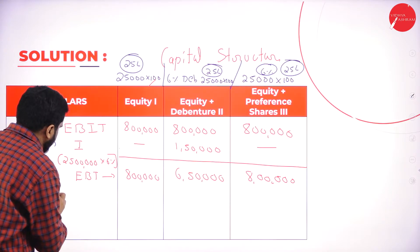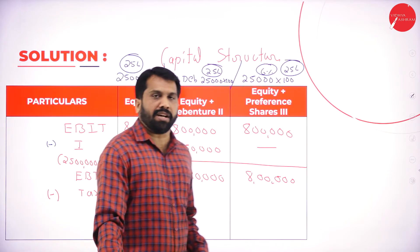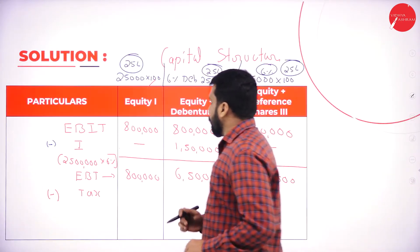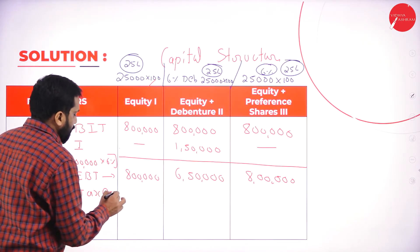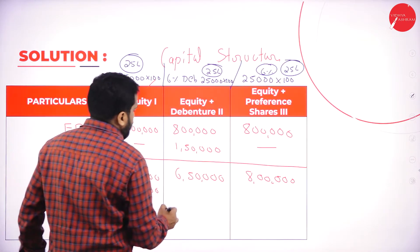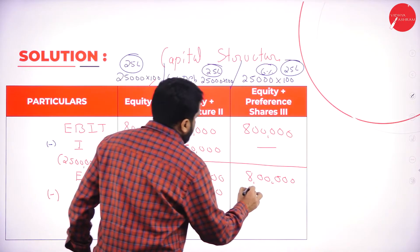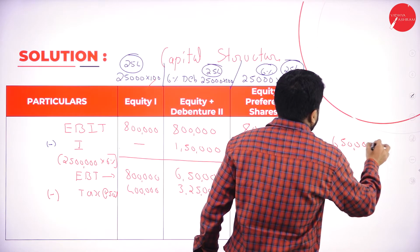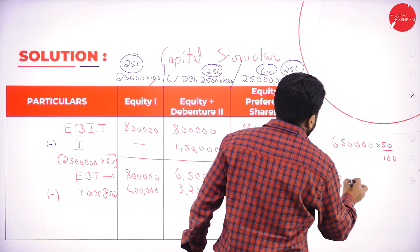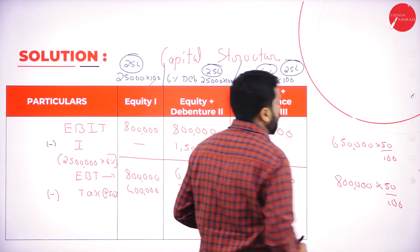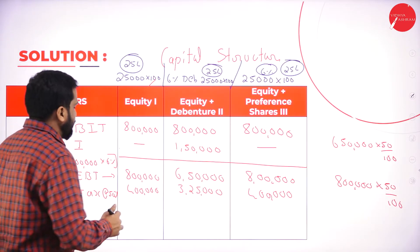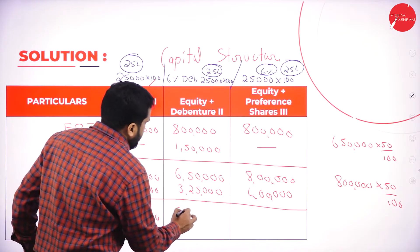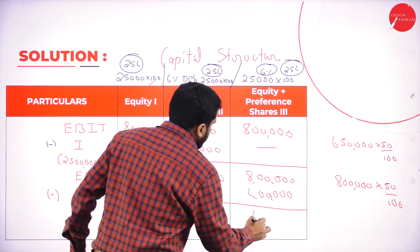From EBT, we subtract tax at 50%. So tax for Alternative 1: 8 lakh × 50% = 4 lakh. Tax for Alternative 2: 6,50,000 × 50% = 3,25,000. Tax for Alternative 3: 8 lakh × 50% = 4 lakh. Profit after tax: Alternative 1 = 4 lakh, Alternative 2 = 3,25,000, Alternative 3 = 4 lakh.